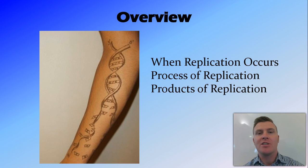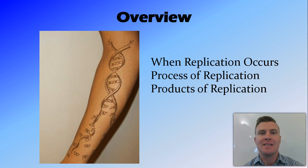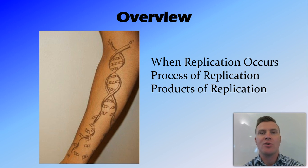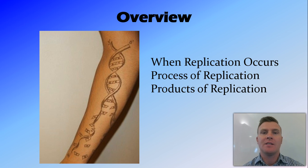In this video, we've looked at when replication occurs — being in the interphase S stage of growth, prior to mitosis or meiosis. We've looked at the process: the DNA is unzipped by the enzyme DNA helicase, forming a replication fork with two strands of exposed bases. Free nucleotides come along and join to the complementary bases on those two strands, and then DNA polymerase joins the sugar phosphate backbone of those free nucleotides, creating two new strands of DNA. These two new pieces of DNA contain one strand from the original DNA molecule, meaning that this process is semi-conservative.